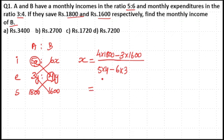Now, 4 into 18 is equal to 72 and 3 into 16 is equal to 48. So 72 minus 48 is equal to 24, meaning the numerator is 2400. The denominator is 5 into 4 equals 20, and 6 into 3 equals 18, so 20 minus 18 equals 2. Therefore 2400 divided by 2 is equal to 1200.